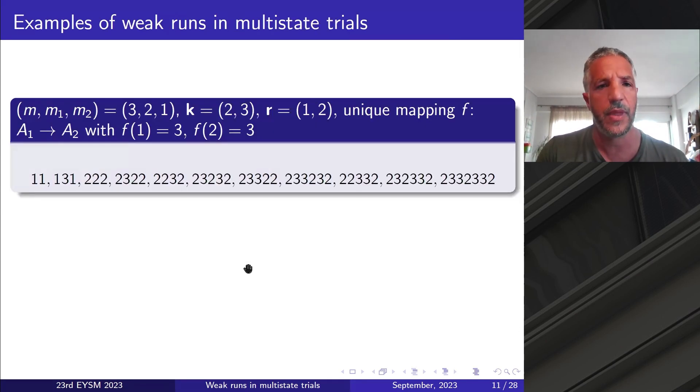Now I may formally define weak runs in multi-state trials. So let Z1, Z2, ..., Zn be a sequence of multi-state trials as defined above, and the function f assigns each success of type i to a single failure of type f(i). Then an r_i-weak i-run of length k_i is a string of outcomes with the following properties: the first and the last outcome is a success of type i, it contains k_i successes of type i, and any two successive of these can only be separated by failure runs of type f(i) according to the assignment of the function defined above, with a maximum length r_i.